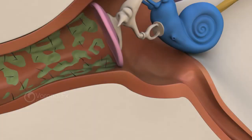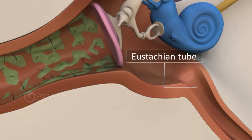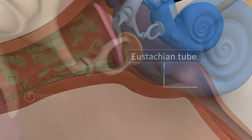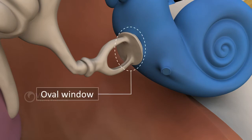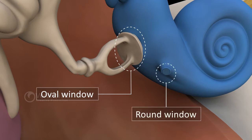The eustachian tube is a small canal that connects the middle ear to the back of the nose and upper throat. Its purpose is to equalize the air pressure in the middle ear with the pressure outside it. In between the middle and internal ear, there are two openings called the oval window and round window.